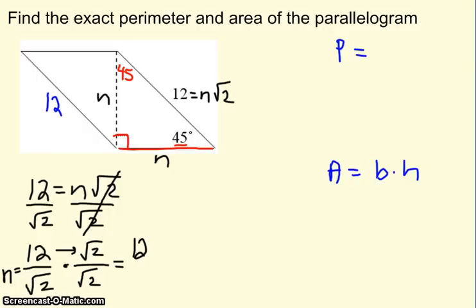Now I can multiply across. 12 times root 2 is 12 root 2. And on the bottom, root 2 times root 2 is 4, which simplifies to 2.